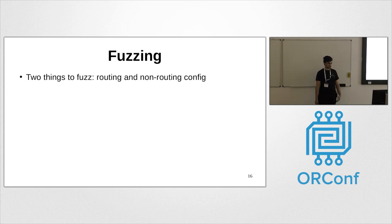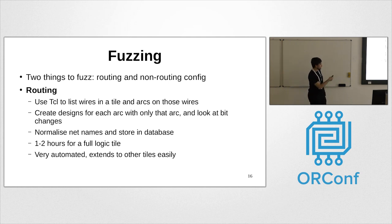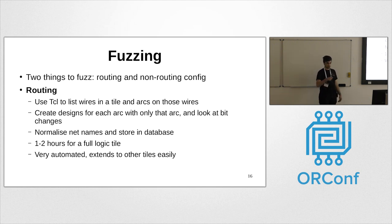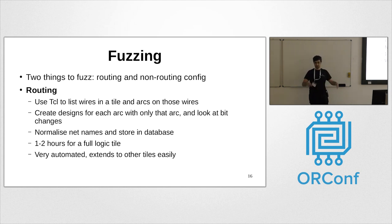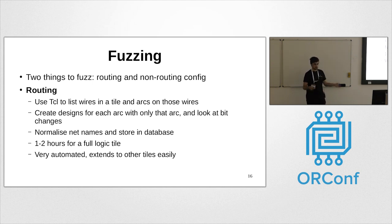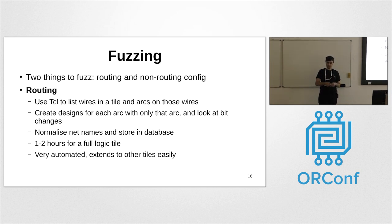To fuzz routing, we use Tcl to list wires in a tile and arcs on those wires, then create a design for every single arc, one at a time, and look at bitstream changes between each design. This is about one to two hours for a full logic tile running multi-threaded — but since Lattice produces a new FPGA every year, a few days to run all the fuzzers is fine. One detail: net names in their tools are global, so there's a normalization process to get normalized net names for a tile type rather than a single tile instance.